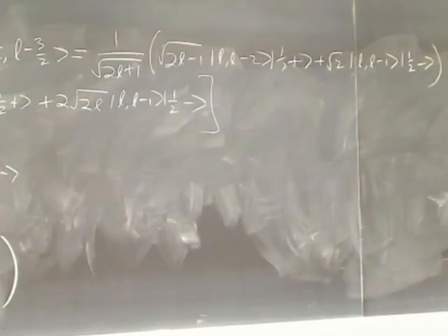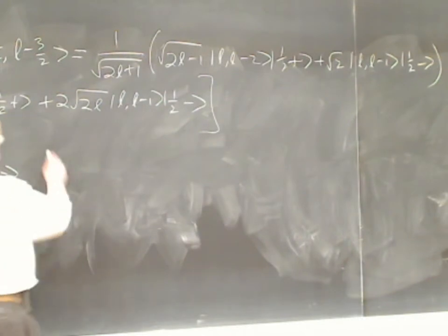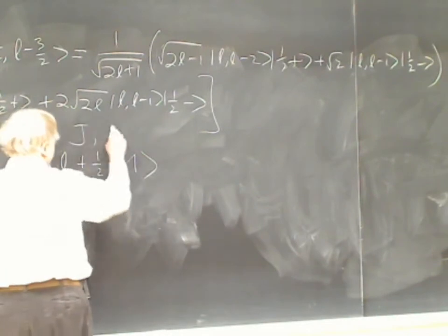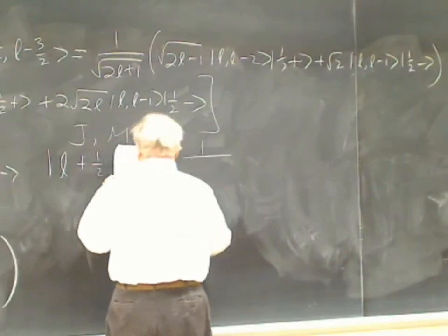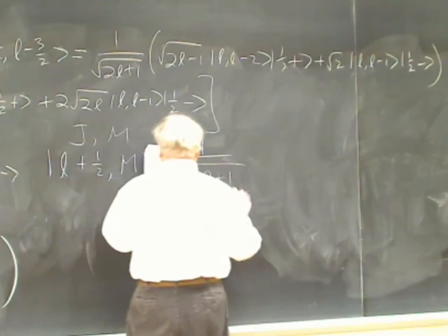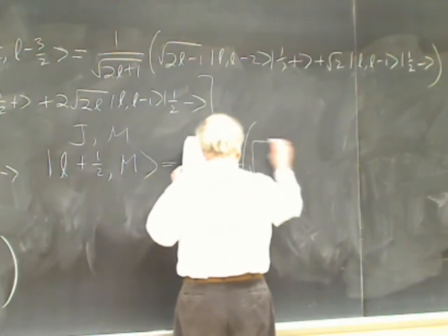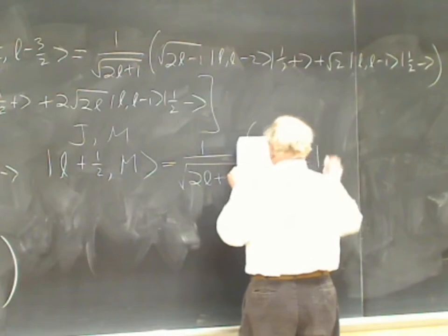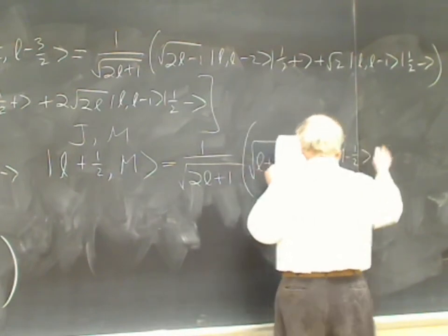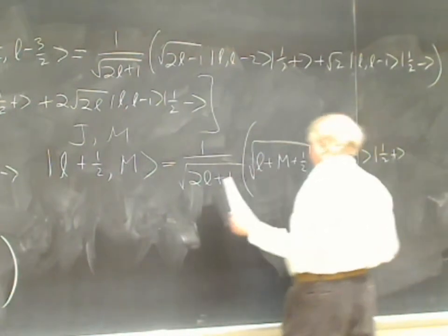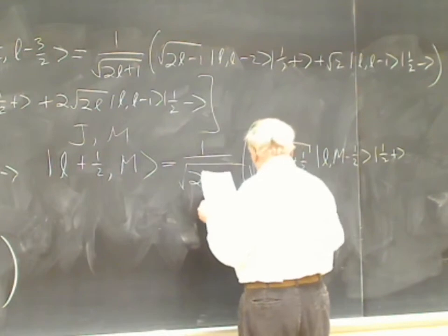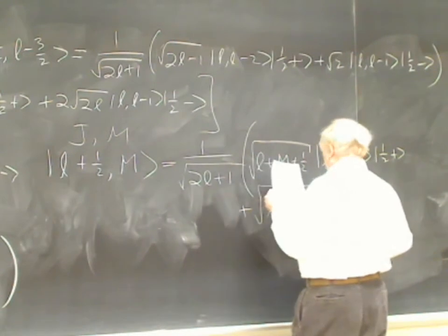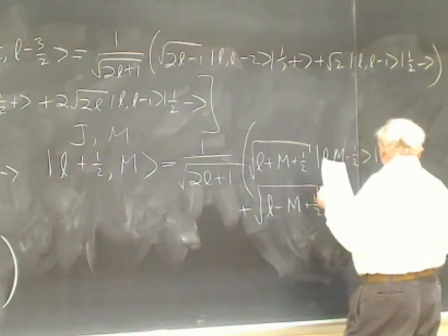The general rule for the states |l+½, M⟩ is: (1/√(2l+1)) [√(l+M+½)|l, M−½⟩⊗|½,+⟩ + √(l−M+½)|l, M+½⟩⊗|½,−⟩]. M ranges from l+½ down to −l−½.